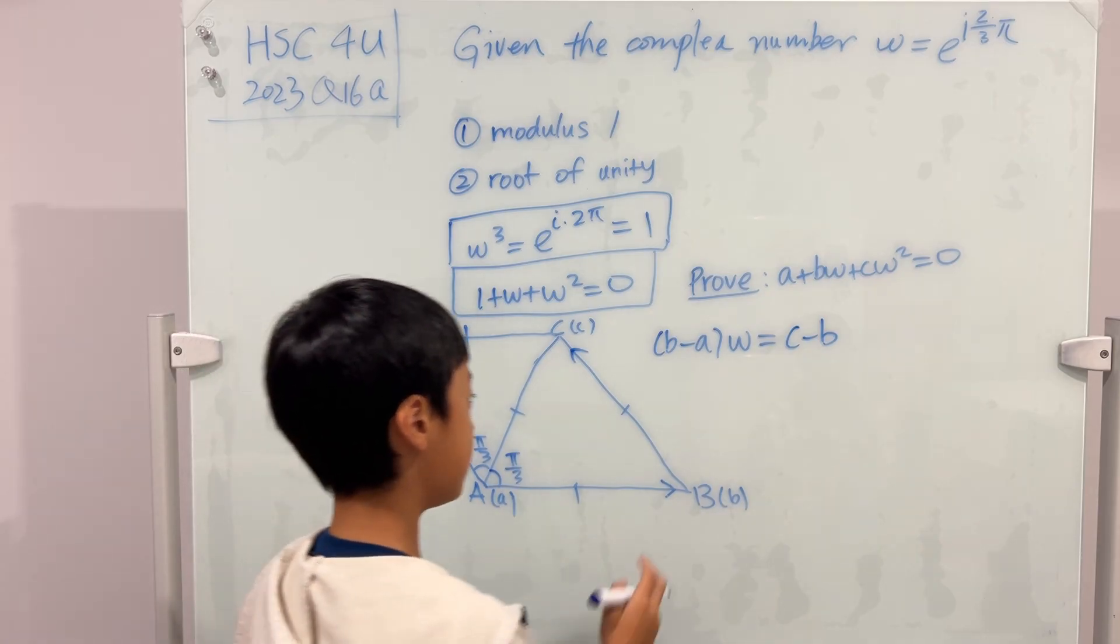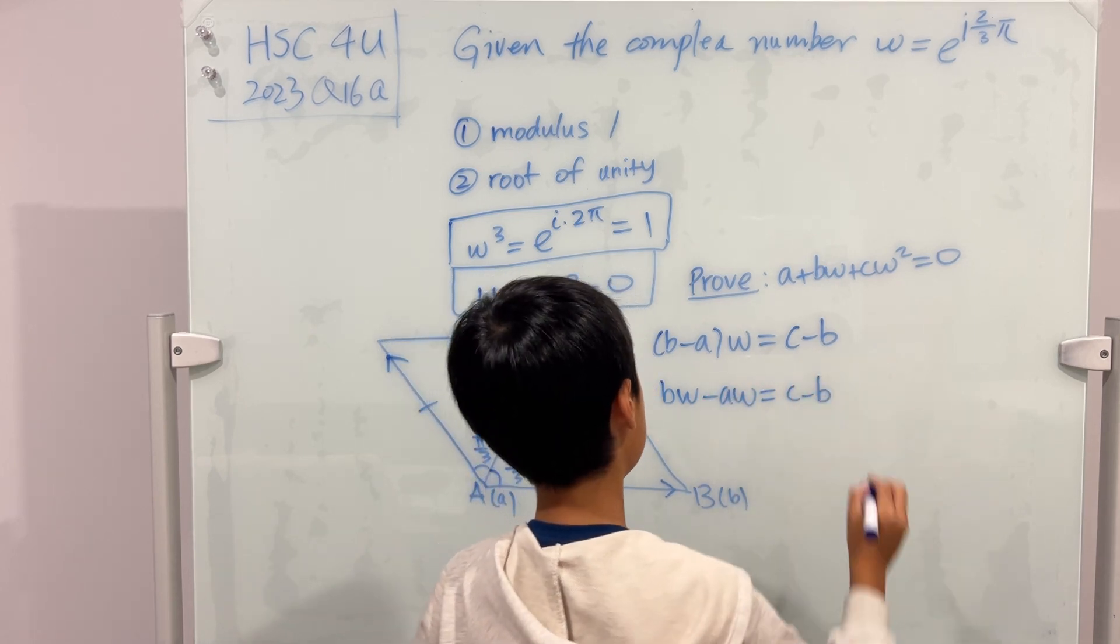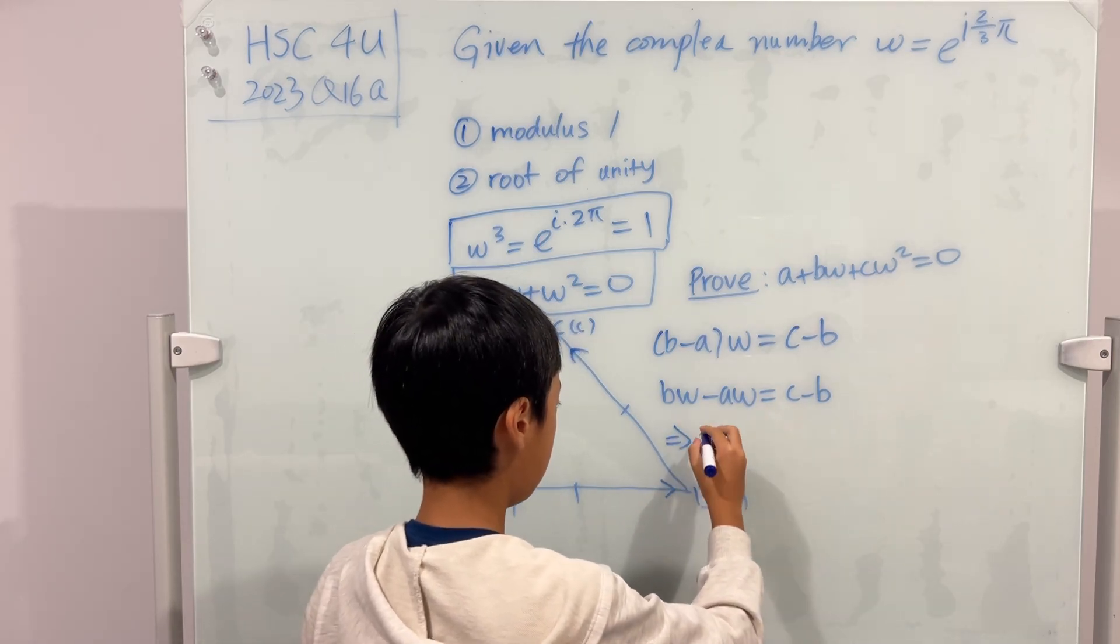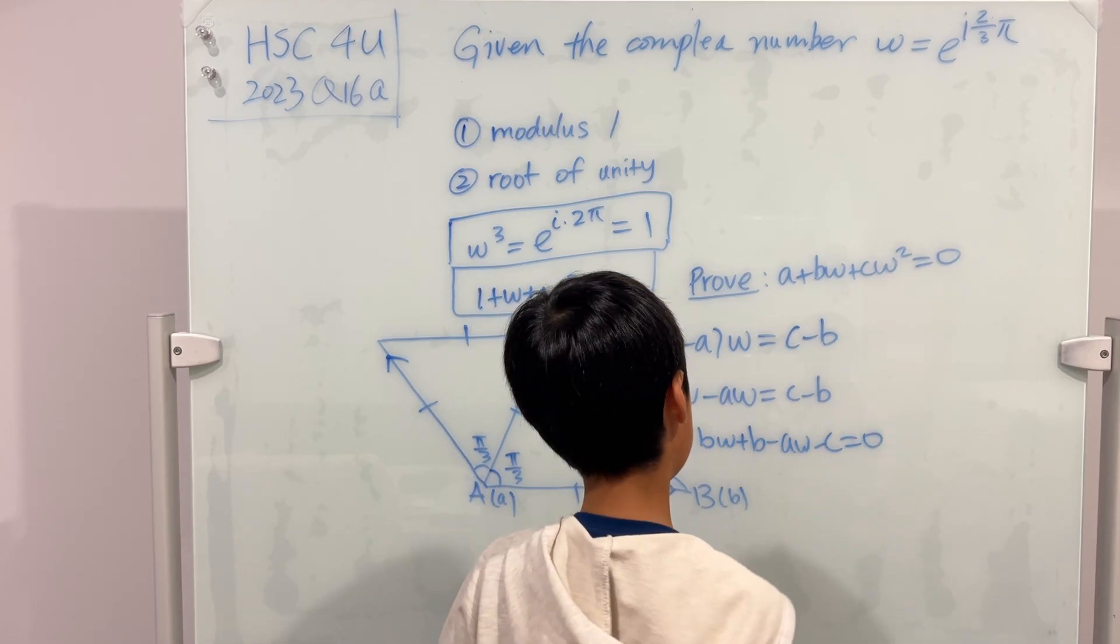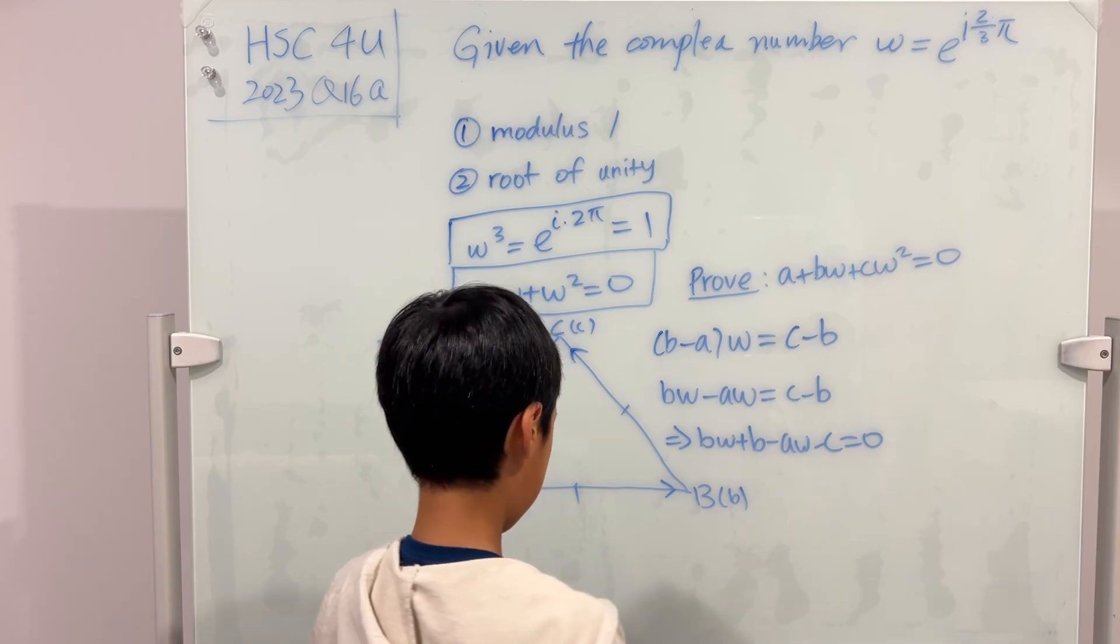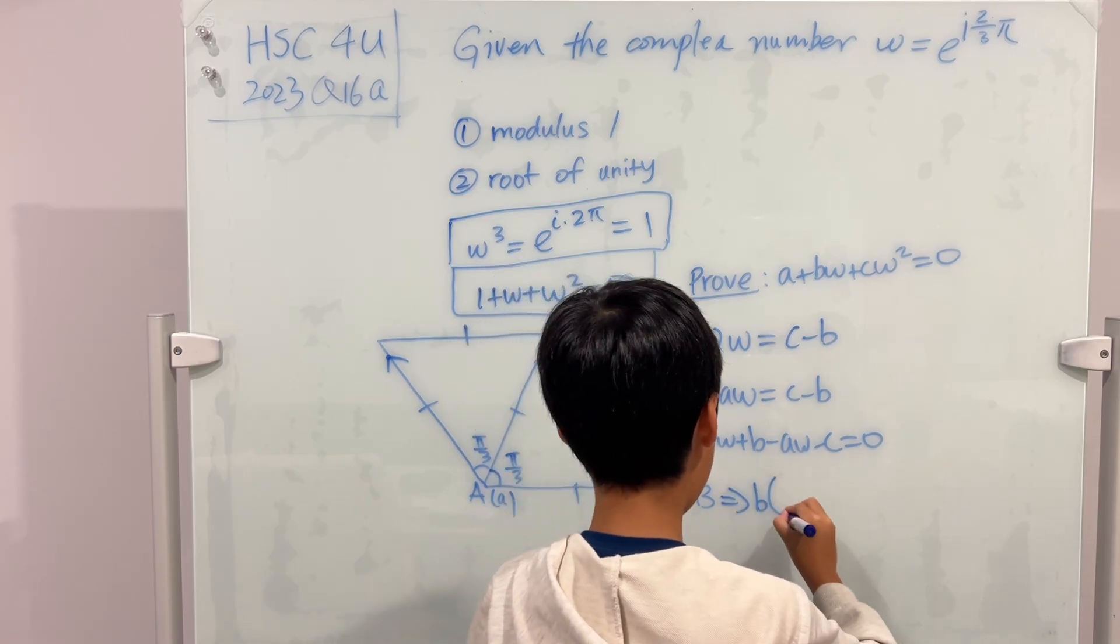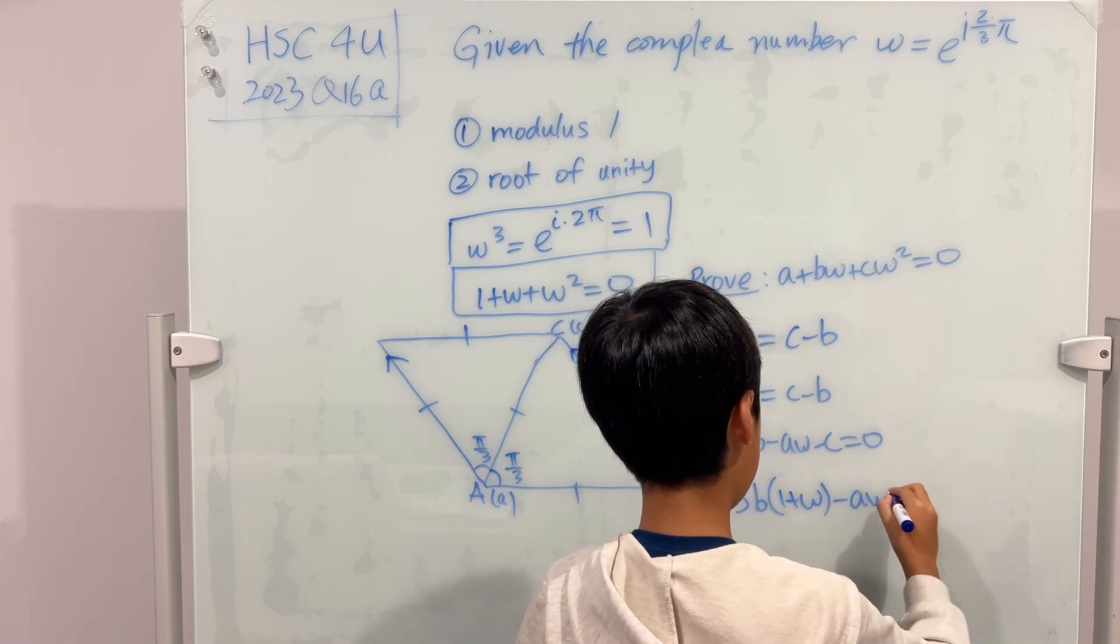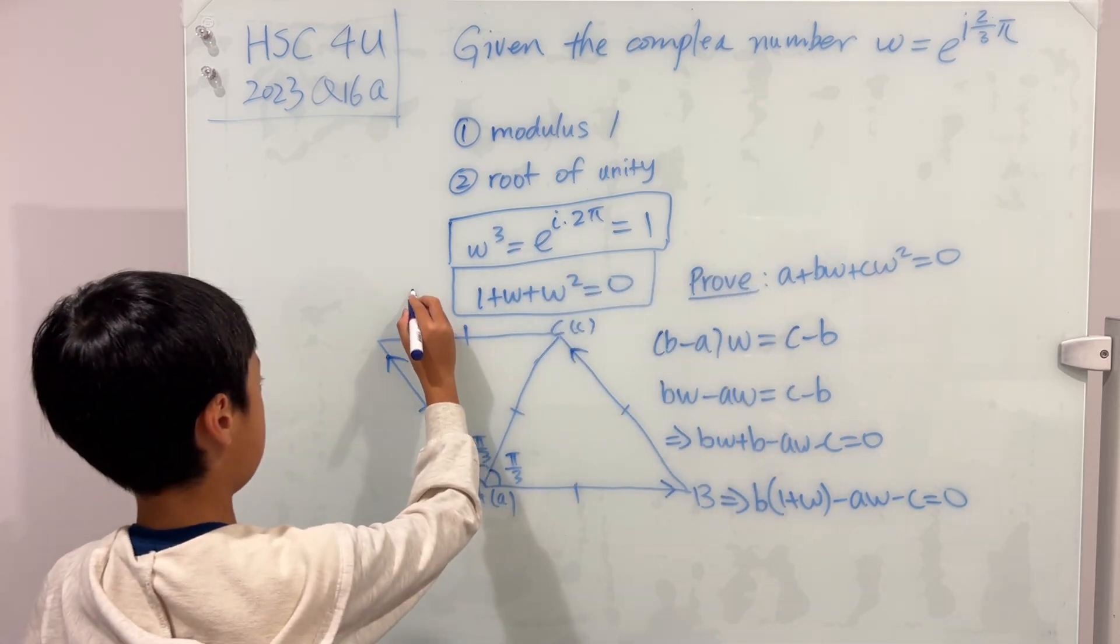Now, I'll unpack the left hand side. So we'll get B w minus a w is equal to c minus b. And then, I'll move everything to the left hand side. So we'll get B w plus b minus a w minus c is equal to zero. And now, I'm going to factor the b out. So we'll get b bracket, one plus w, I'm going to write it in that order, minus a w minus c is equal to zero. And now, we have to use i. So I'm going to say this is i.